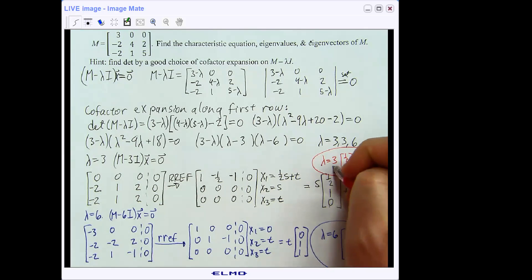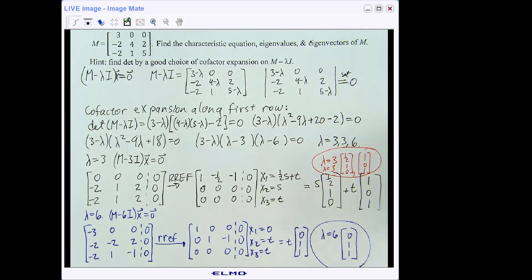And so sometimes we might even write, since we had the eigenvalue repeated, we might write lambda equals 3 and lambda equals 3. For the other guy, for lambda equals 6, we put him in and find out that we get a single parameter, and the eigenvector that corresponds to him is [0, 1, 1].